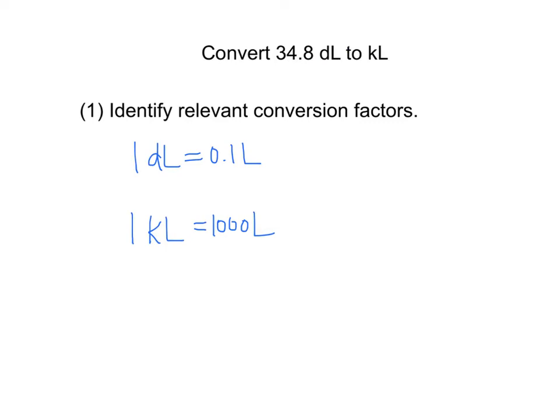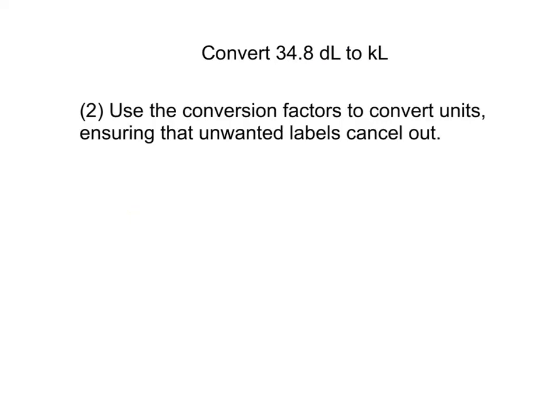We're going to use the conversion factors so that our unit labels that we don't want anymore cancel out. Here's the solution. We're always going to start with what we're given, and in this case we're given 34.8 deciliters. So I'm going to start by writing that. The next piece is we're going to convert those conversion factors into a fraction so that we can cancel out our unwanted labels.